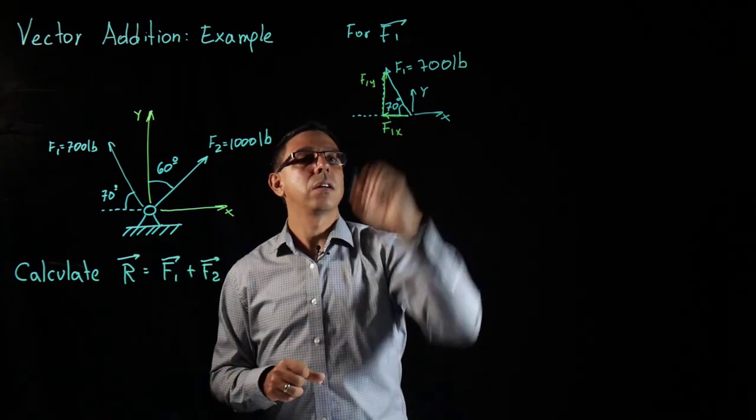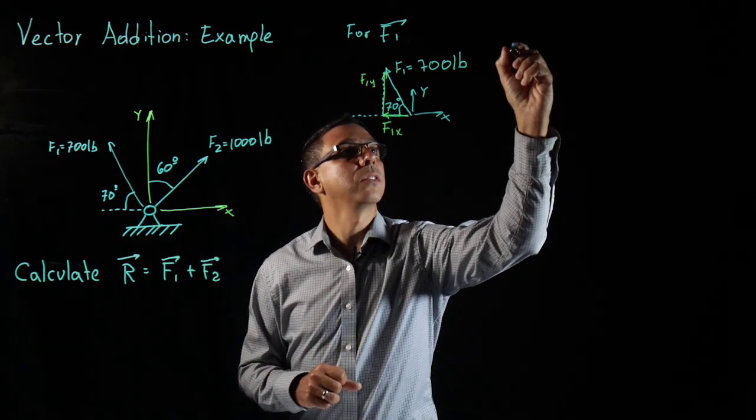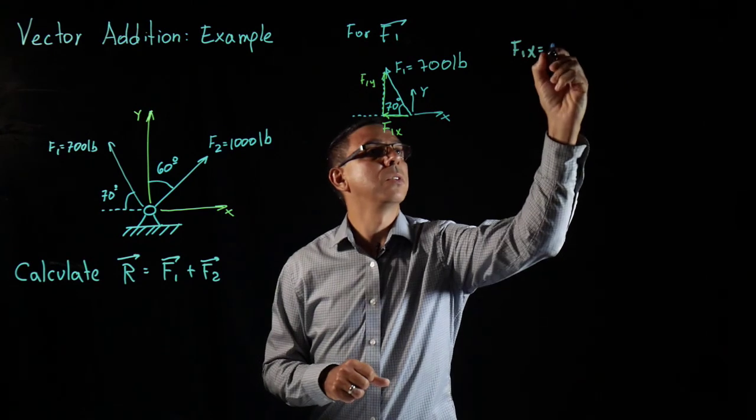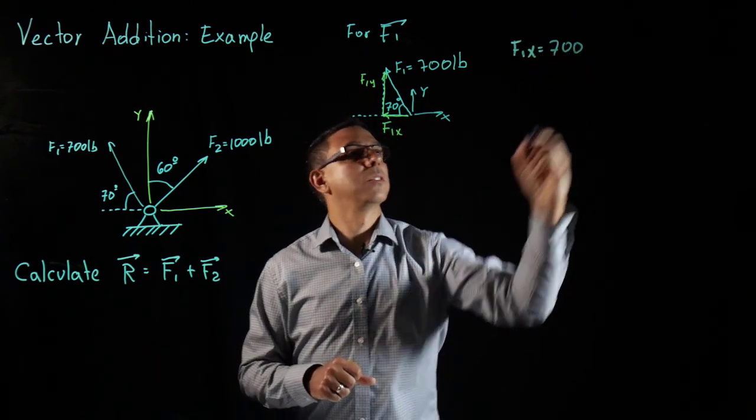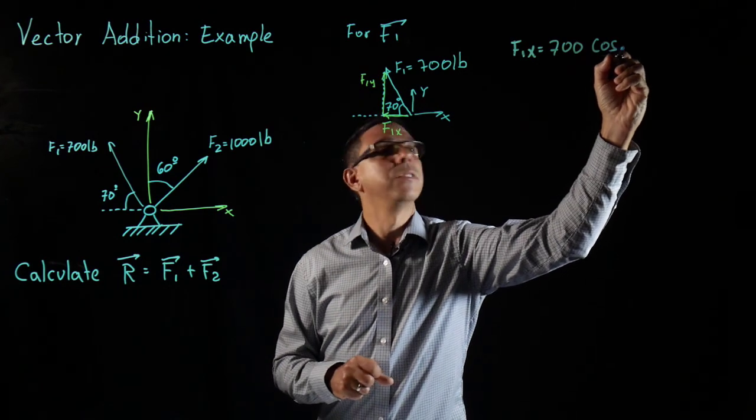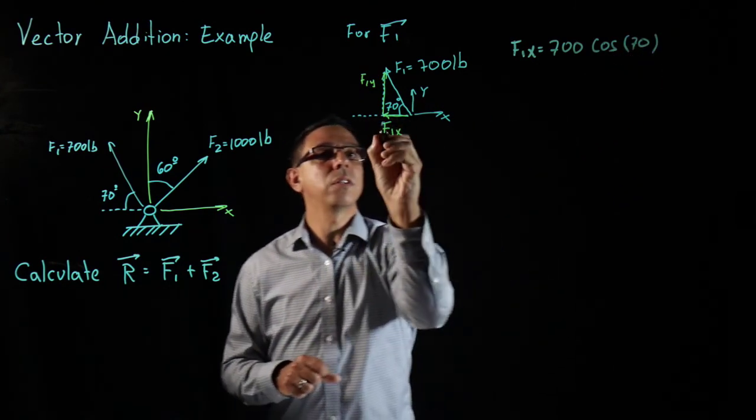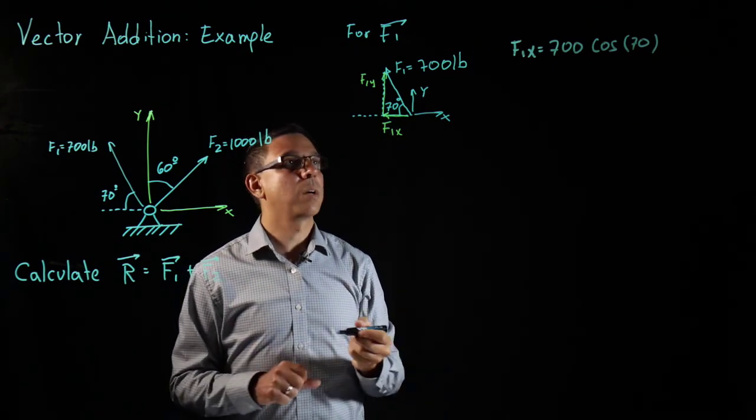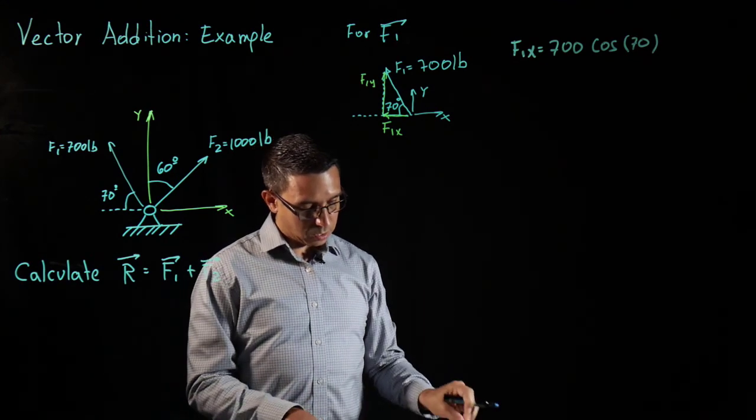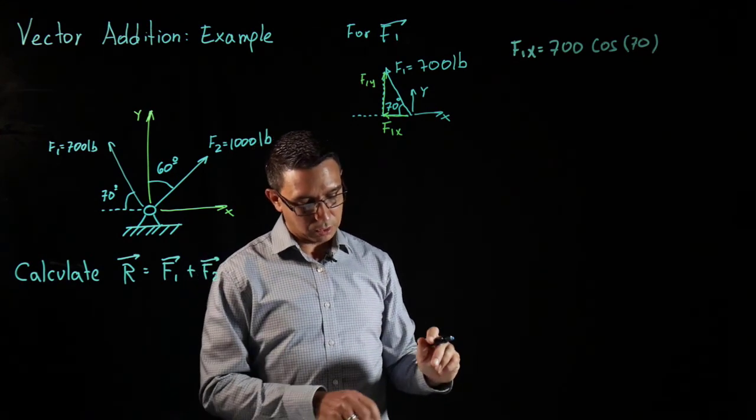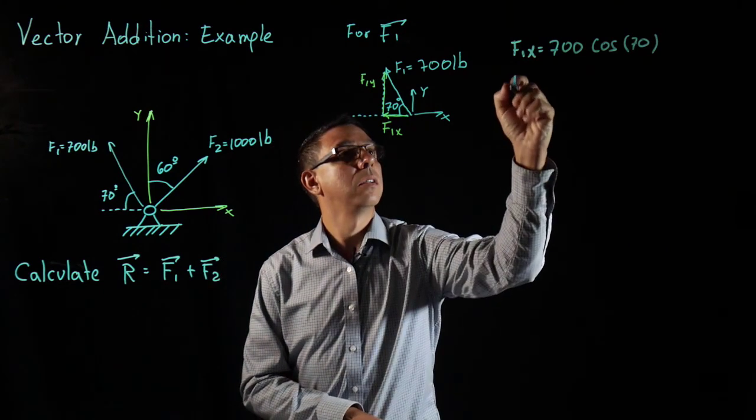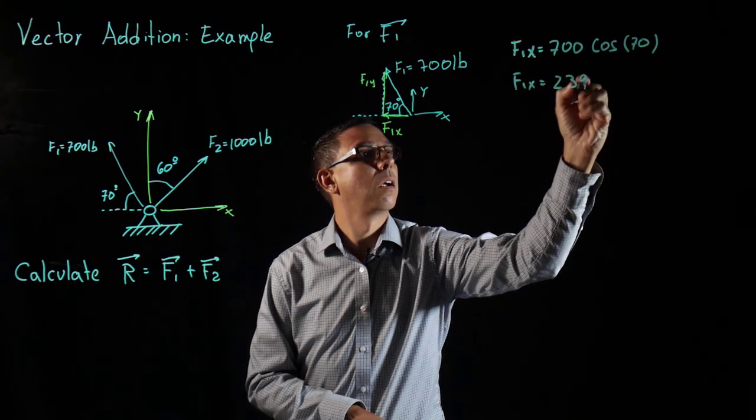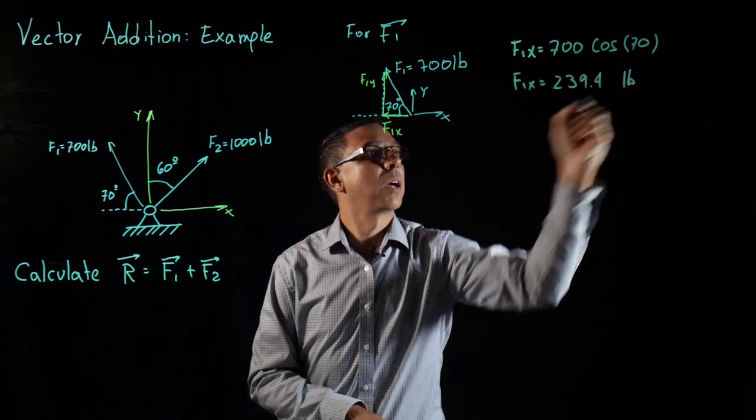So now I can use the angles to be able to answer that question. From this right angle we know that my F1X is going to be equal to the magnitude which is 700 pounds times the cosine of 70. Now, notice something. This is only the magnitude of that F1X. I'm going to add this sign and it goes in the opposite direction of X when I write my Cartesian vector form. And that gives me my F1X is 239.4 pounds.